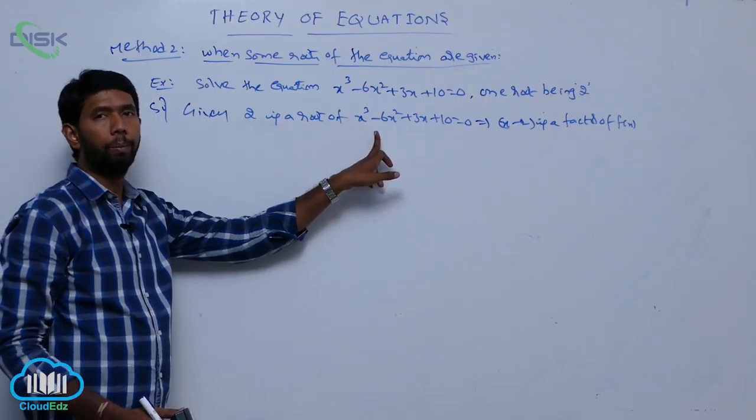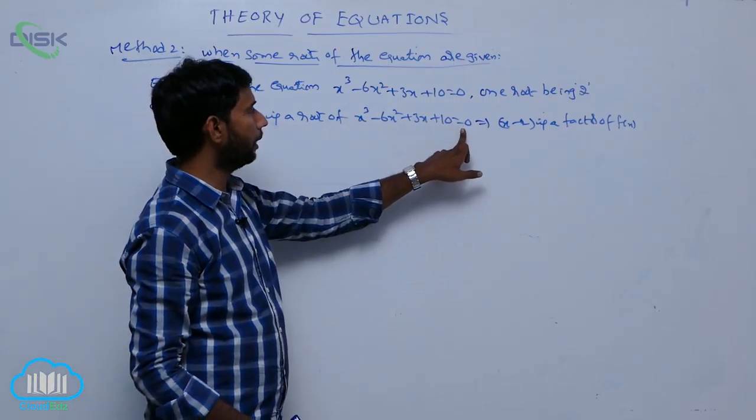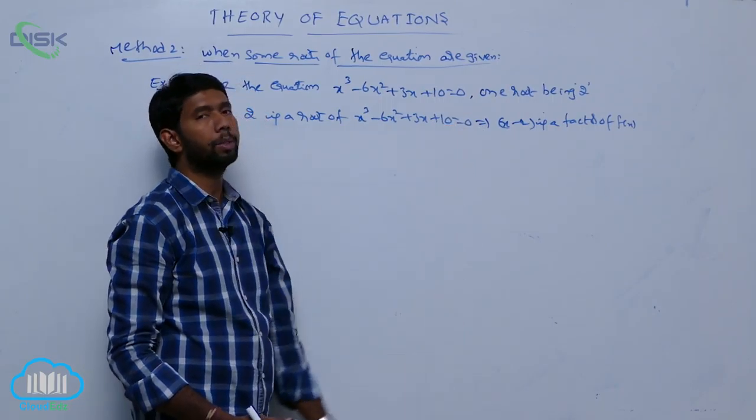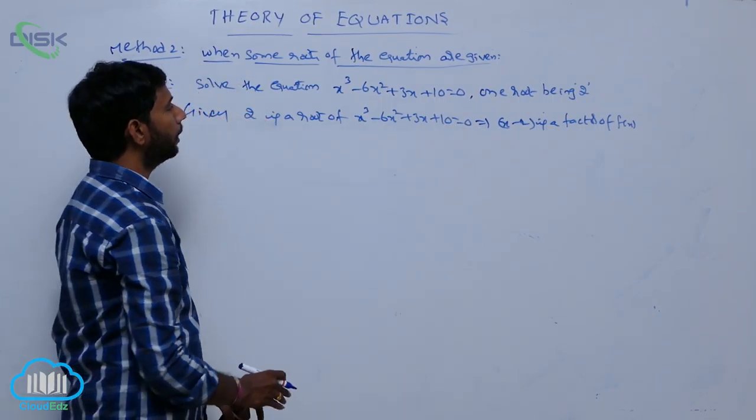Given 2 is the root of equation x³ - 6x² + 3x + 10 = 0, that implies x - 2 is the factor of the equation f(x).